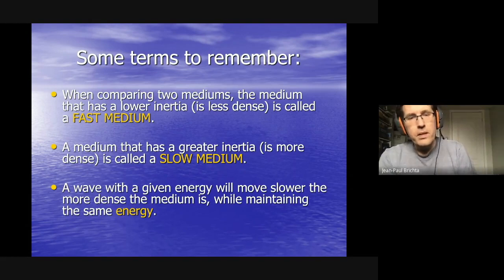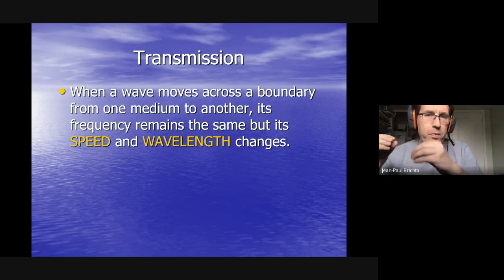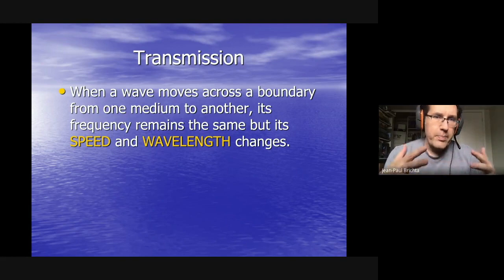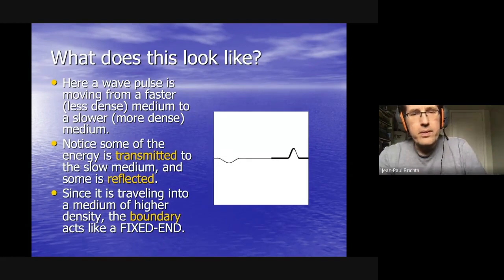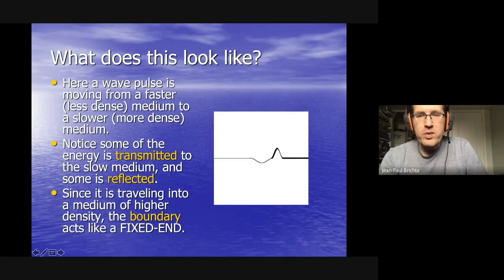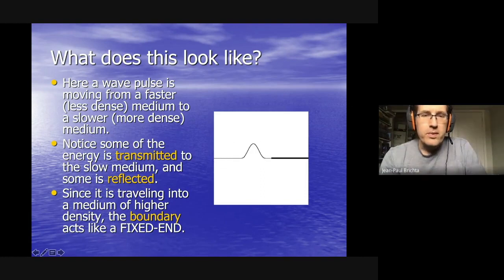What we're interested in is what happens when the wave reaches the boundary — the knot tying the two ropes together. The wave's speed changes going from fast to slow medium, and so does the wavelength, making the shape of the wave appear to change. Starting in the fast medium, the wave reaches the boundary and a little bit of it gets transmitted through into the slow medium.